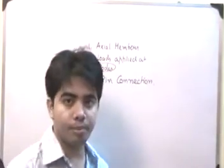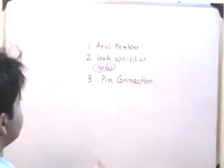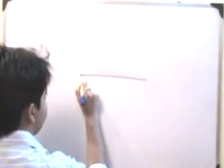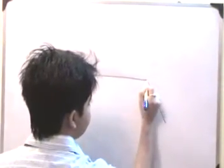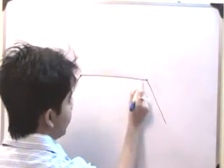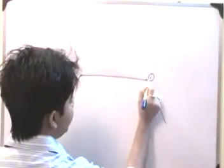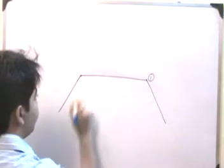Now if we try to see these three things in further detail, for example I have a member like this, and there is another member like this, and there is another member. This member is connected to this member by this node A which is pinned at A, and this by node B that is pinned at B.